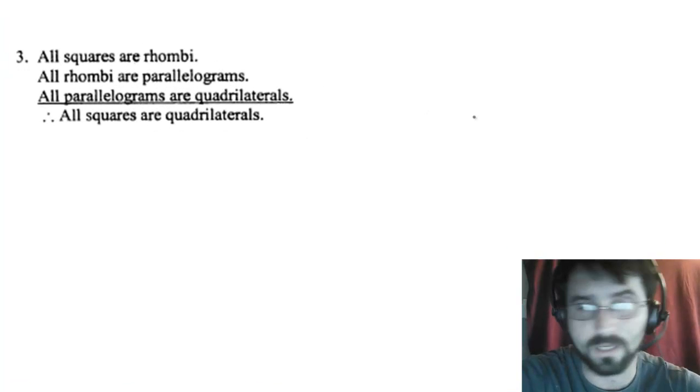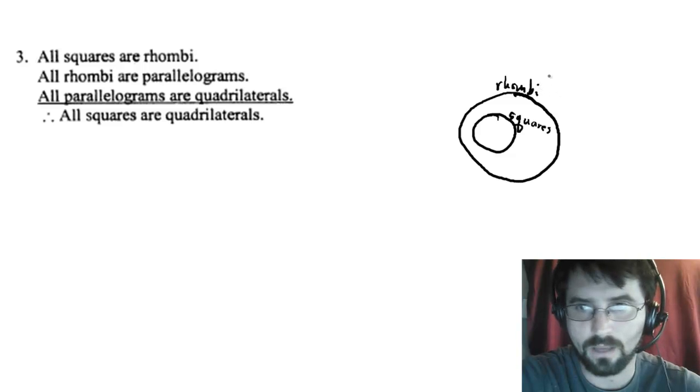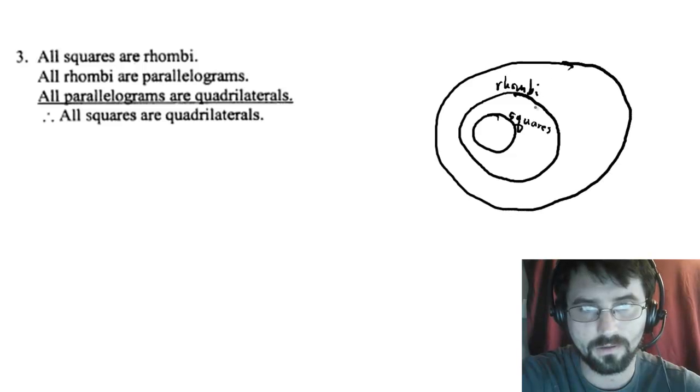All squares are rhombi. So we have squares, and all squares are in this thing called rhombi. All rhombi are parallelograms. So rhombi, all those are in parallelograms.